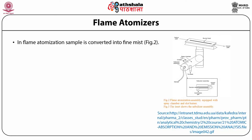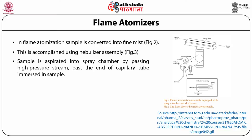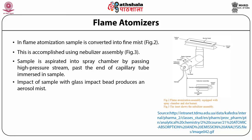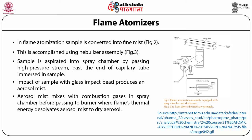In flame atomization, the sample is first converted into a fine mist consisting of small droplets of solution, as shown in figure 1. This is accomplished using a nebulizer assembly shown in figure 2. The sample is aspirated into a spray chamber by passing a high-pressure stream of combustion gases past the end of a capillary tube immersed in the sample. The impact of the sample with the glass impact bead produces an aerosol mist. The aerosol mixes with combustion gases in the spray chamber before passing to the burner, where the flame thermally dissolvates the aerosol mist to a dry aerosol of small solid particles.